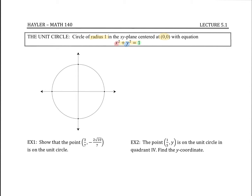This is the xy plane, so I'm going to go ahead and label this xy. What do we know about the coordinate plane? Well, we have the four quadrants: quadrant 1, quadrant 2, quadrant 3, and quadrant 4.